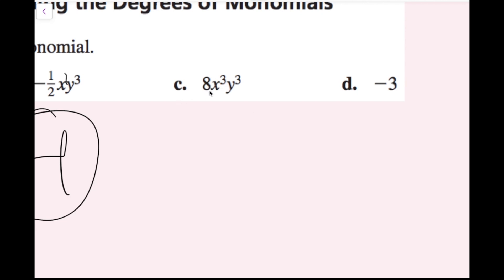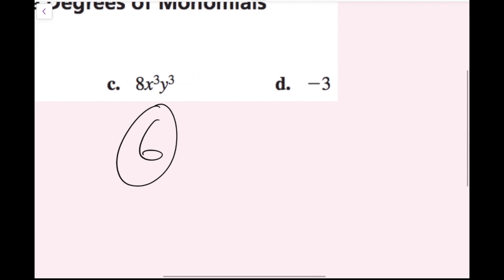For part c, I have 8x cubed y cubed. Ignoring the coefficient, I have x to the 3rd and y to the 3rd. Adding the exponents of the variables: 3 plus 3 is 6, so this term is degree 6. And for the constant term, the degree of a non-zero constant is always 0.